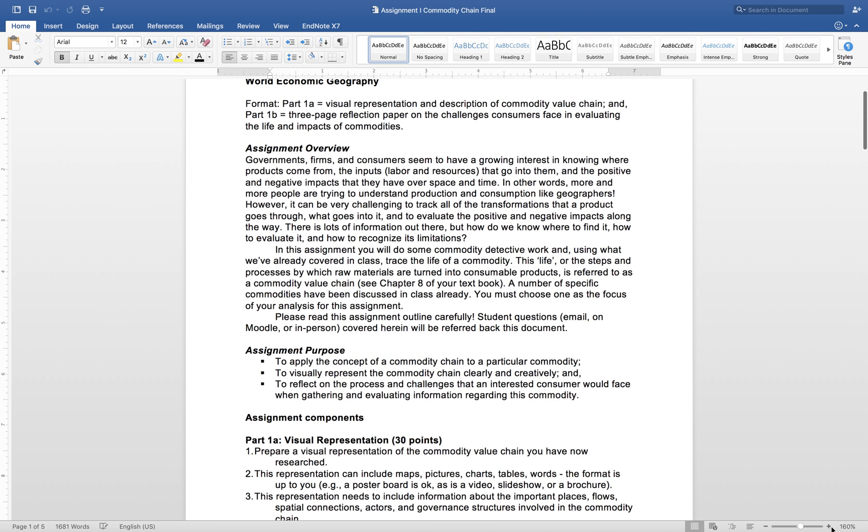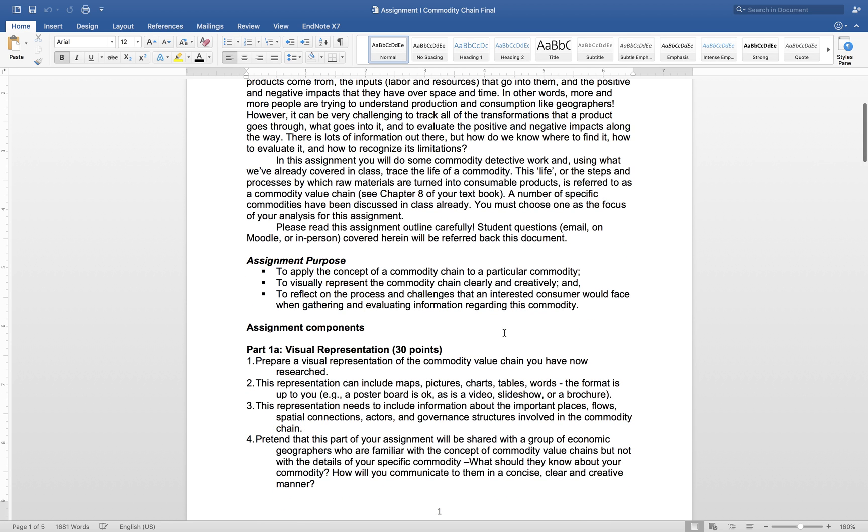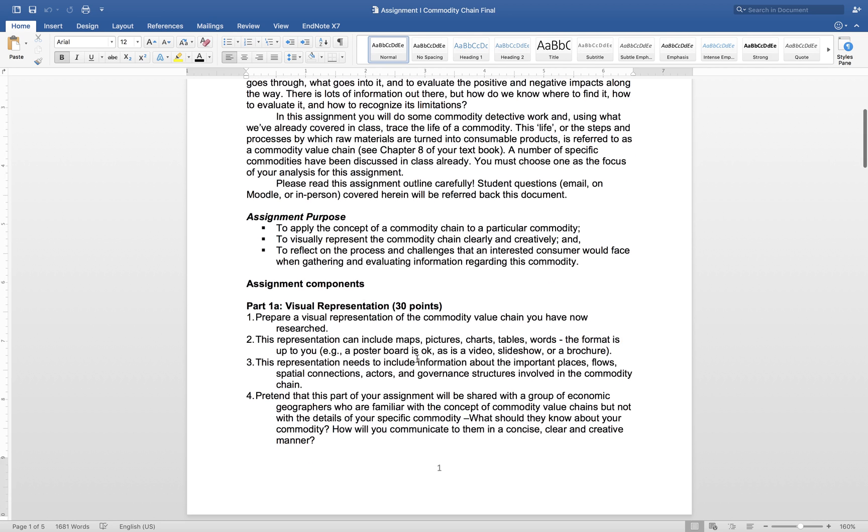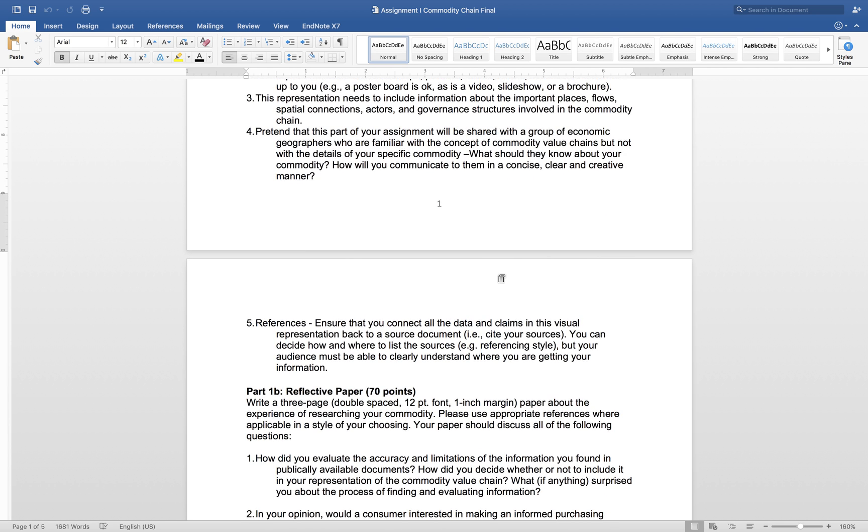The purpose is to apply the concept of this commodity chain to any particular commodity. The first part is the visual representation. How can you visually represent how this commodity chain that you have understood as a consumer, part of your research? You can take this and be creative and go any way you want - make it maps, pictures, charts. I've provided a few resource links that you can use. This representation needs to include information that shows flows of material, spatial connections, institutions, actors, how these are all tied up as far as you can research and imagine. This part of the assignment will be shared with a group of not just economic geographers but anyone who should be able to see this visual part and be able to see how all of this flows in this commodity chain to get to this final product.